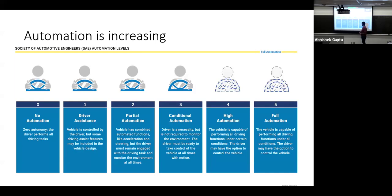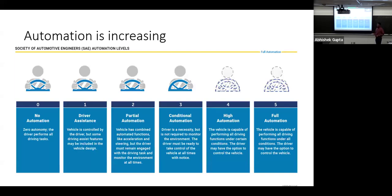Conditional automation means the driver must be ready to take control at any time with proper notice. Tesla's autopilot system would be conditional automation — the driver is supposed to be responsible for bad things that happen. They claim their system can drive on a highway completely autonomously, yet we know about the accidents that have occurred. High automation means the driver may choose to control or not control the vehicle.